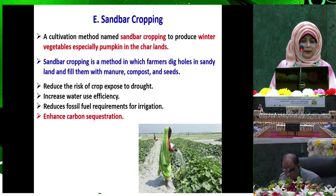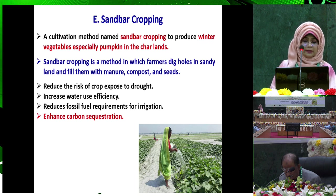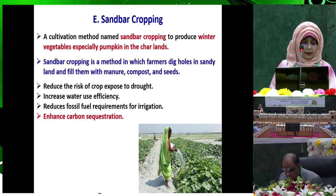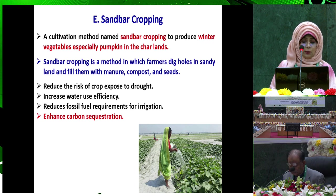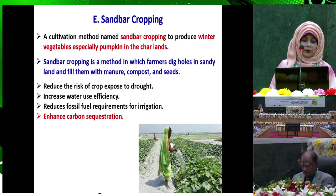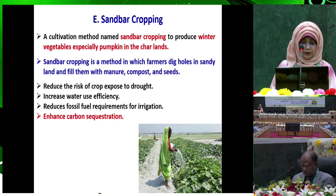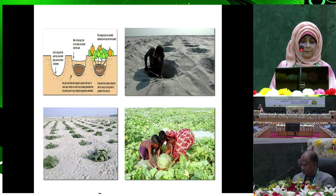Sandbar cropping is a cultivation method to produce winter vegetables, especially pumpkin, in charred land. Farmers dig holes in sandy land and fill them with manure compost and soil, enhancing carbon sequestration.